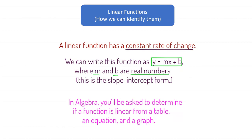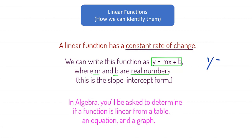Another way that we can think of a linear function is that it's a function that we can write as y equals mx plus b, where m and b are just real numbers. For example, y equals 2x minus 1 is a linear function — 2 and negative 1 are real numbers. Similarly, y equals 0.1x minus 0.2 is still a linear function, since 0.1 and negative 0.2 are still real numbers.